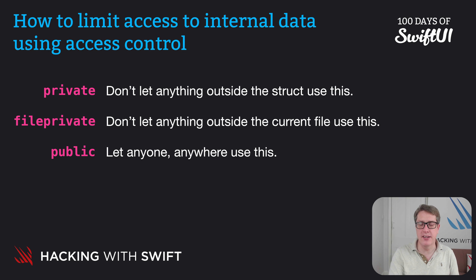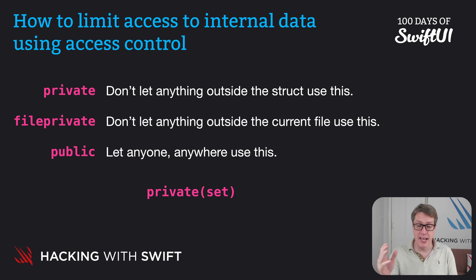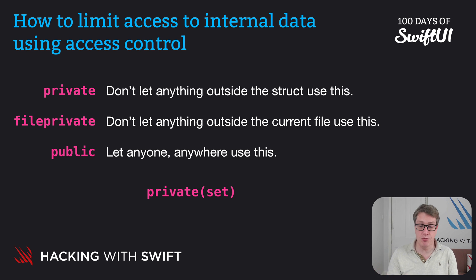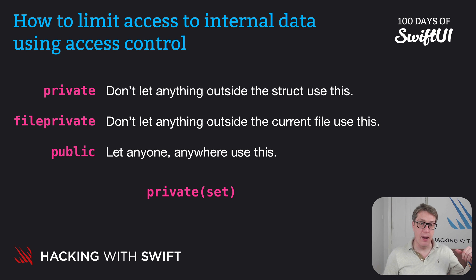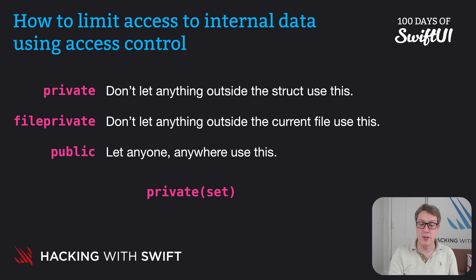There is one extra one that is sometimes useful for learners: private(set). You'll use it occasionally while learning and a lot when writing production code. It means: let anyone read this property externally or internally — that's fine — but only let internal methods write it. So with BankAccount, it would mean we could print out our funds amount externally from the struct, but we couldn't modify it directly. We'd have to call deposit or withdraw, which makes sense. In this case, private(set) is actually the best choice — you can read the current bank funds all you want, but you can't change it without running the custom logic.